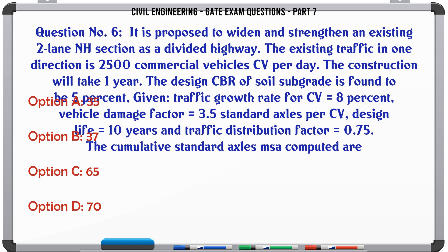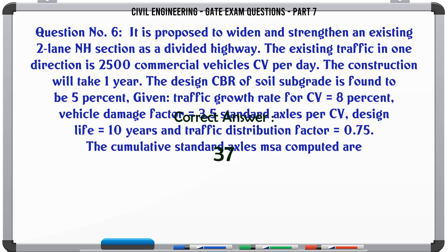It is proposed to widen and strengthen an existing two-lane NH section as a divided highway. The existing traffic in one direction is 2,500 commercial vehicles (CV) per day. The construction will take one year. The design CBR of soil subgrade is 5%. Given: traffic growth rate for CV 8%, vehicle damage factor 3.5 standard axles per CV, design life 10 years, and traffic distribution factor 0.75. The cumulative standard axles computed are: A) 35, B) 37, C) 65, D) 70. The correct answer is 37.